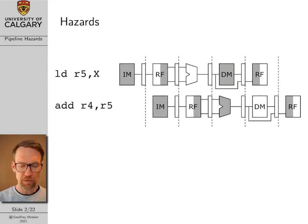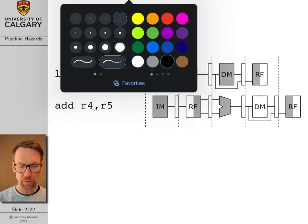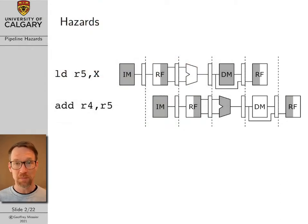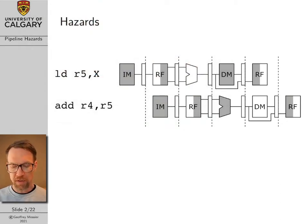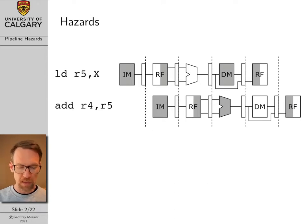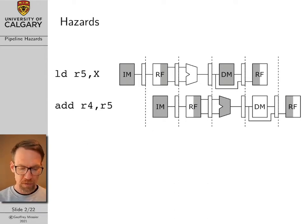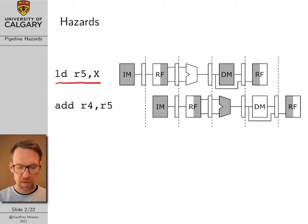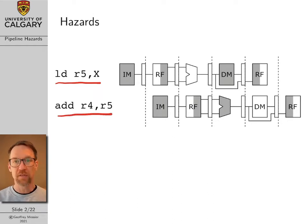The first thing we should do in a lecture about pipeline hazards is define exactly what we mean by a hazard. Here's a pipeline timeline diagram and two assembly language commands. The first command loads a value into register 5, and the second command takes the value in register 5 and adds it to the value in register 4.